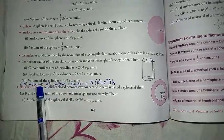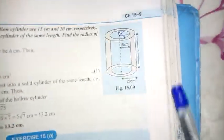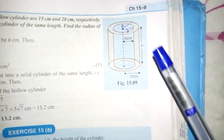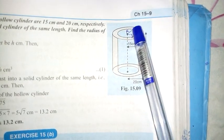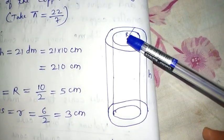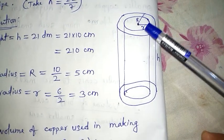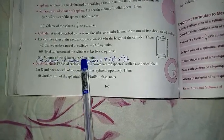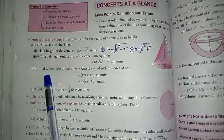A hollow cylinder has a thick wall, giving it two radii: capital R is the outer radius (from center to outer boundary) and small r is the inner radius (from center to inner wall). The volume of a hollow cylinder = π(R² − r²)h, which is the same as the regular cylinder formula but with R² − r² replacing r².